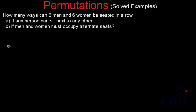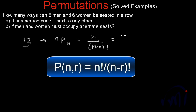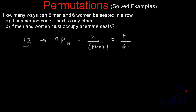If any person can sit next to any other person, then we will have total 12 people, and these 12 people have to occupy 12 places. So it will boil down to nPn, where there are total n people and n places. This equals n factorial divided by (n minus n) factorial, or n factorial divided by 0 factorial. Since 0 factorial is 1, this will finally be equal to n factorial.